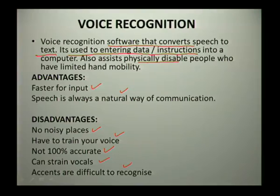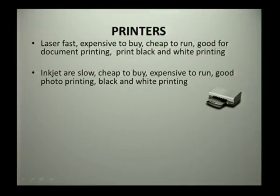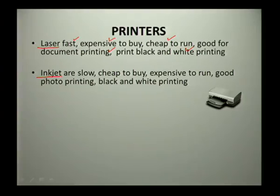The next device is a printer. There are two types to consider. A laser printer is fast, expensive to buy but cheap to run, mostly good for document printing, and can print in black or white. An inkjet printer is slower than a laser, cheap to buy but expensive to run, provides good photo printing, and can also print in black and white. These are the basic printer types, but both laser and inkjet come in many different variations.